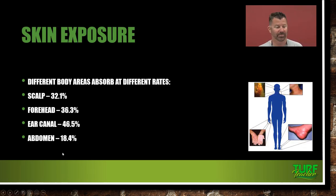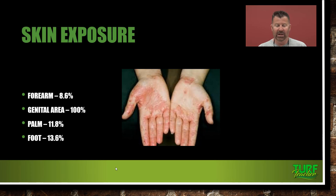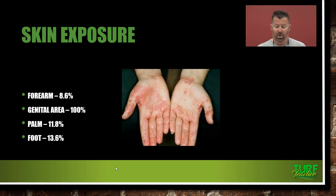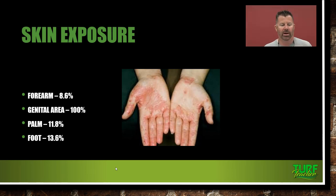We just talked about the scalp, forehead, ear canal, abdomen, and forearm. Now look at this image of the hand — pesticide exposure to the palms causes burns that are going to hurt. It's harder for any type of injury to heal on our hands and feet because we use them constantly. A cut on your hand takes a lot longer to heal than a cut on your arm, just because of the constant movement.